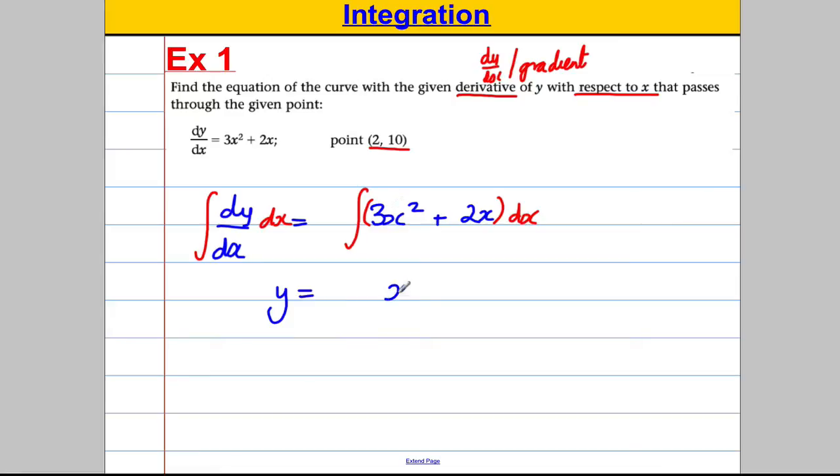If I integrate dy by dx, I get y. If I integrate this, add 1 to the power, x cubed, and do 3 over this new power, 3. And plus, add 1 to the power, so it'd be x squared, we'd have 2 over 2, plus your constant of integration, c.